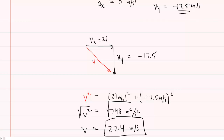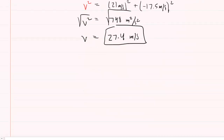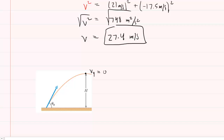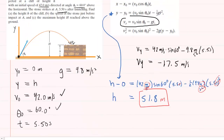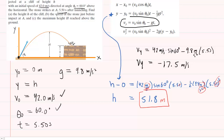Finally, moving on to part C, we're looking for the maximum height the projectile reaches. Importantly, at the maximum height the final y-velocity equals 0 meters per second. We need to pick one of the projectile motion equations to find that height, H.